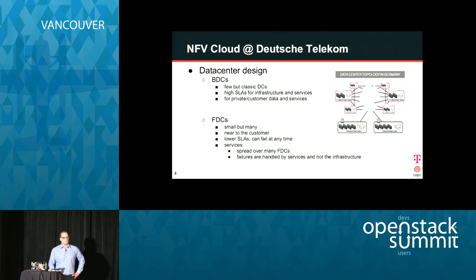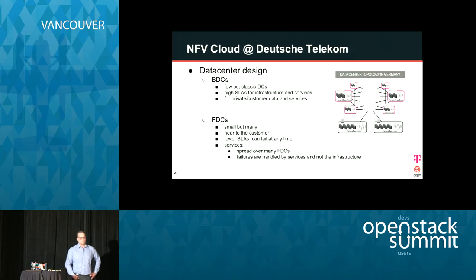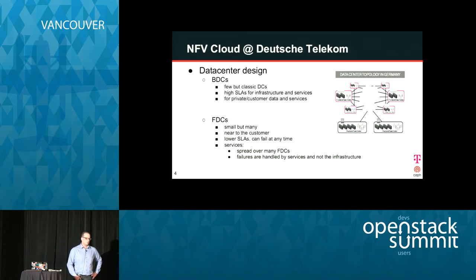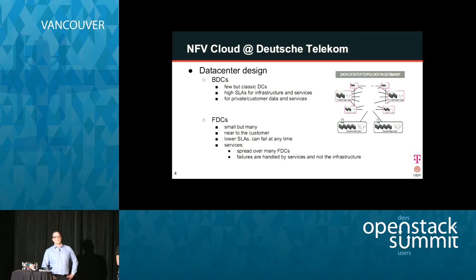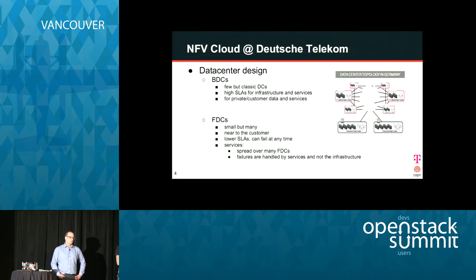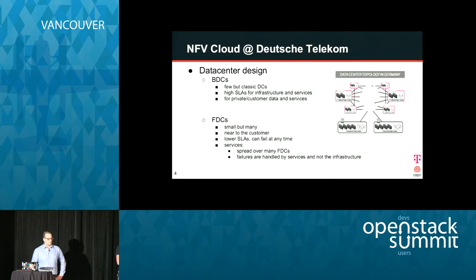On the other hand, we have front-end data centers. We have many front-end data centers, but they are very small. They are near to the customer to provide services as close as possible for speed, and they have lower SLAs. We expect they can fail at any time. So the services themselves running in these data centers are responsible for providing the service and switching over. These services are spread across many data centers and have to handle errors in the infrastructure.